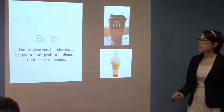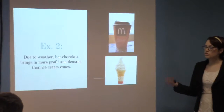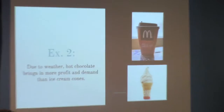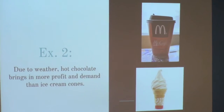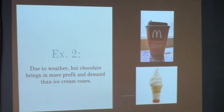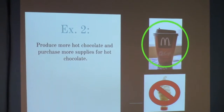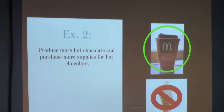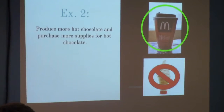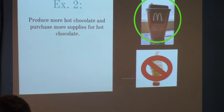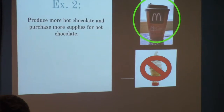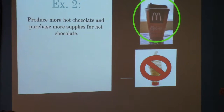Another example: due to cold weather, more people are going to want to consume hot chocolate rather than ice cream cones to stay warm. So McDonald's has the incentive to produce more hot chocolate and buy more of those ingredients from suppliers instead of ice cream cones, because otherwise it will cause shortages.